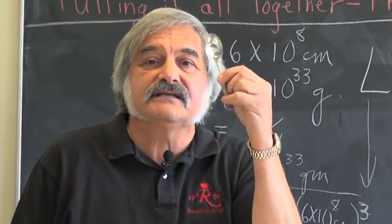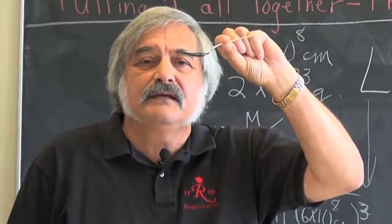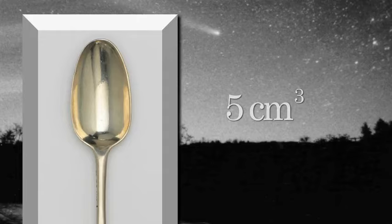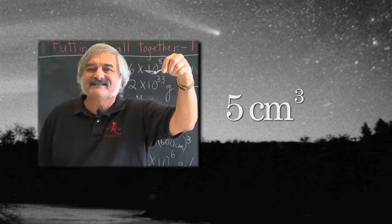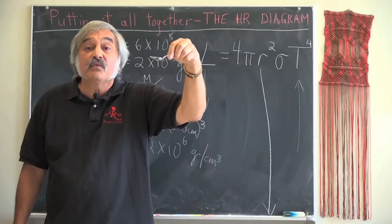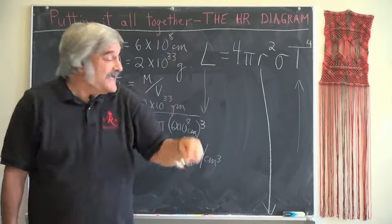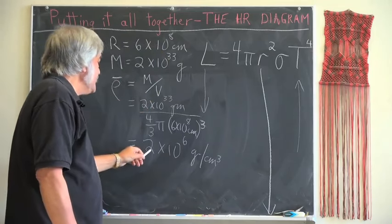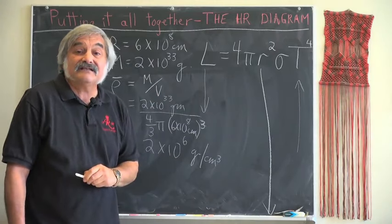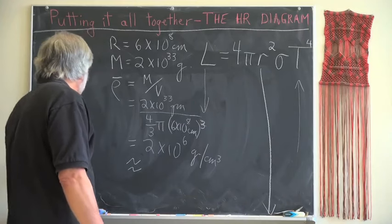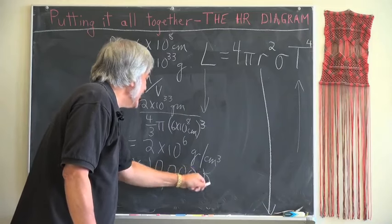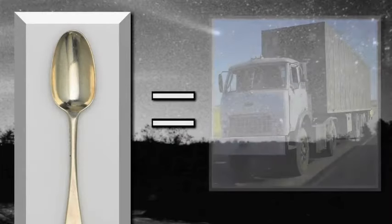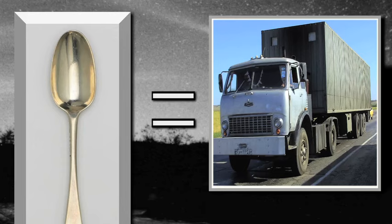Here we have a teaspoon. It has a volume in the spoon part of about 5 cubic centimeters. So let's scoop up 1 teaspoon of material from a typical white dwarf. How much will that material weigh or what will its mass be? Well, we know that. It's just going to be 5 times this amount. And it turns out that that is approximately, for 5 cubic centimeters, about 10,000 kilograms. This mass is about the same as a typical 53-foot semi-tractor trailer.